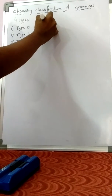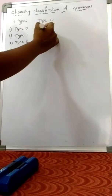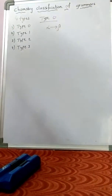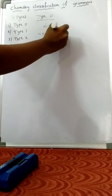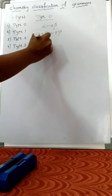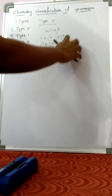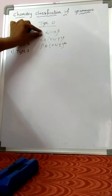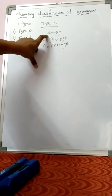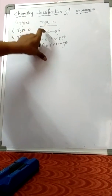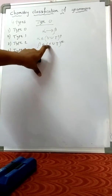Let's talk about Type 0. Type 0 grammar: alpha tends to beta, where alpha belongs to V union T with positive closure, and beta belongs to V union T whole star (Kleene closure). In the left-hand side, there are variables and terminals.